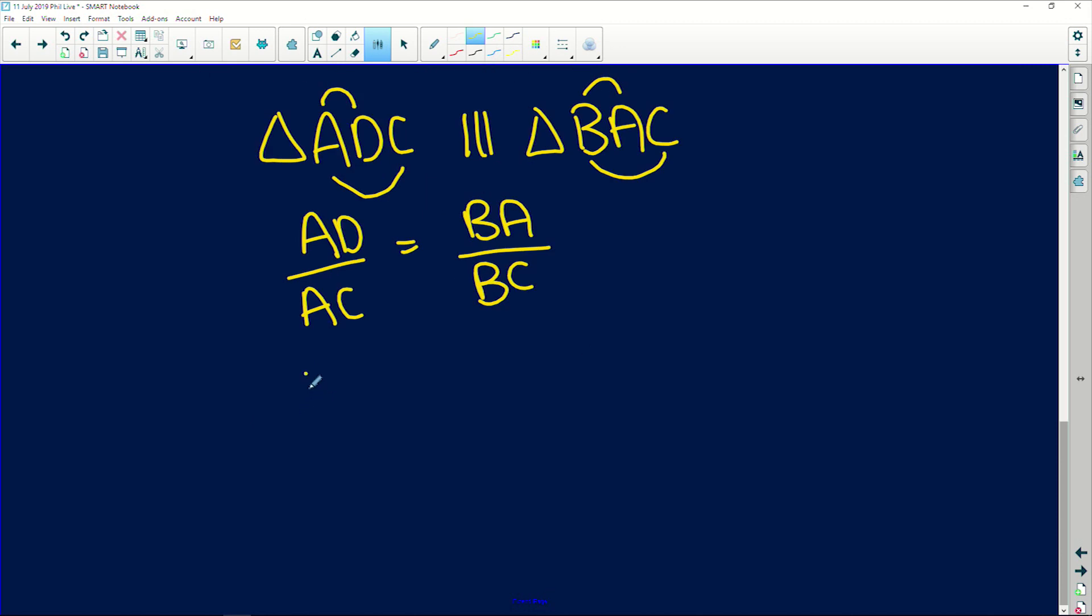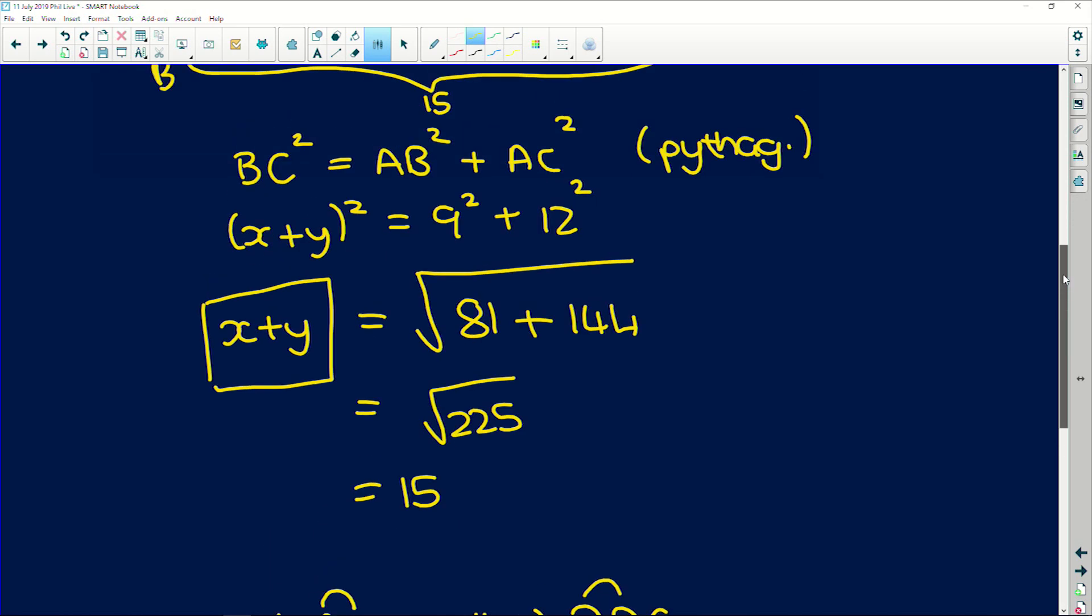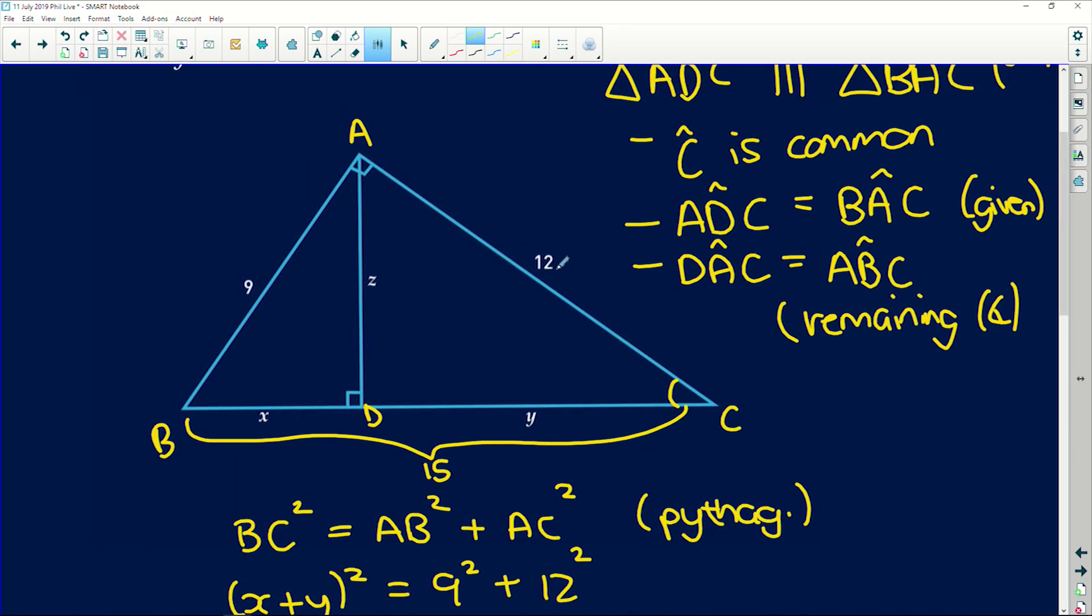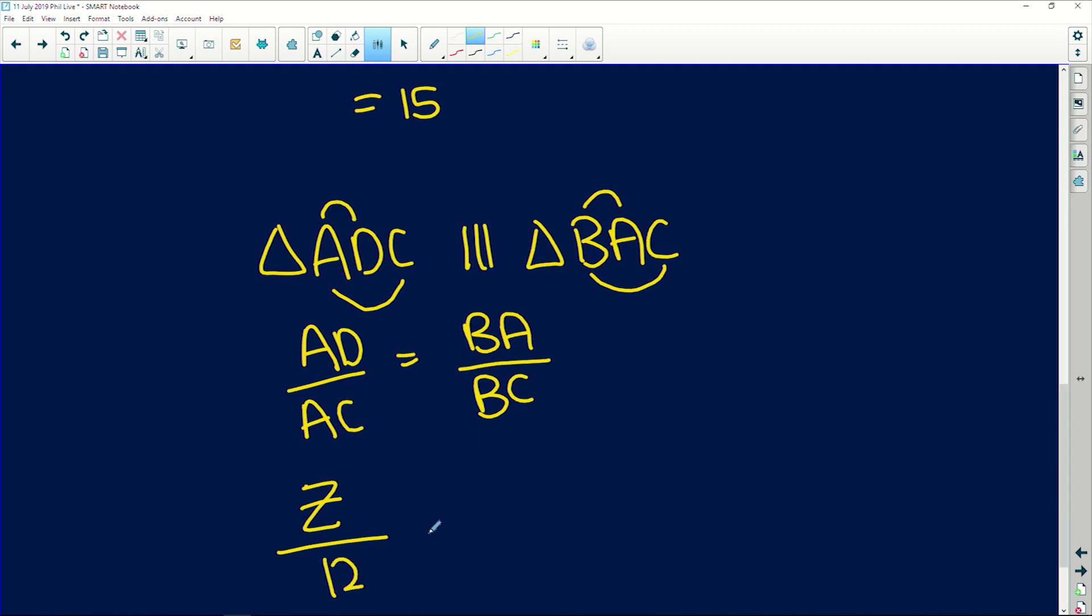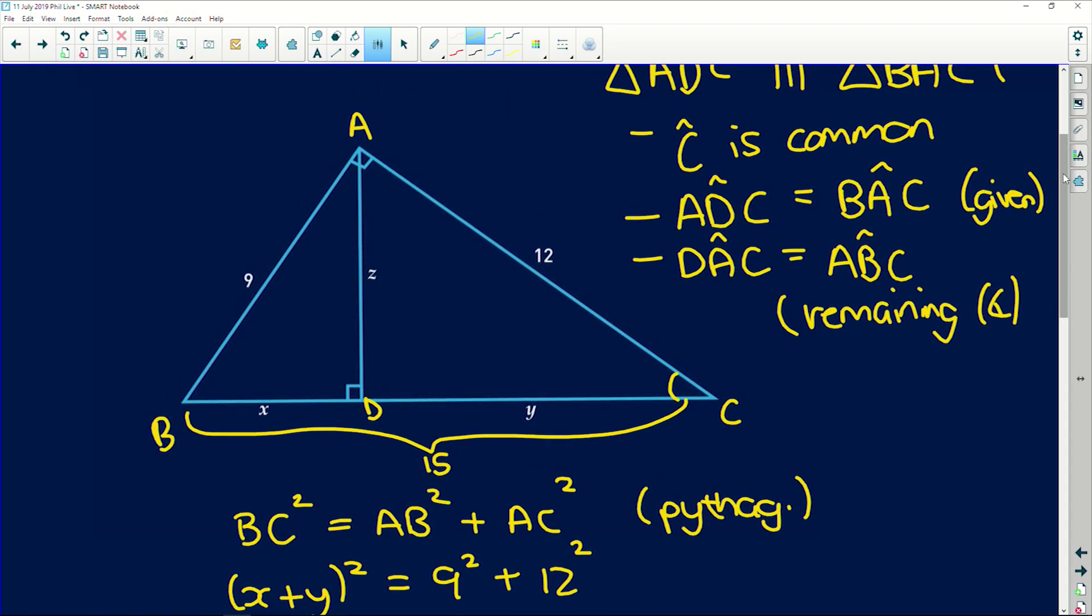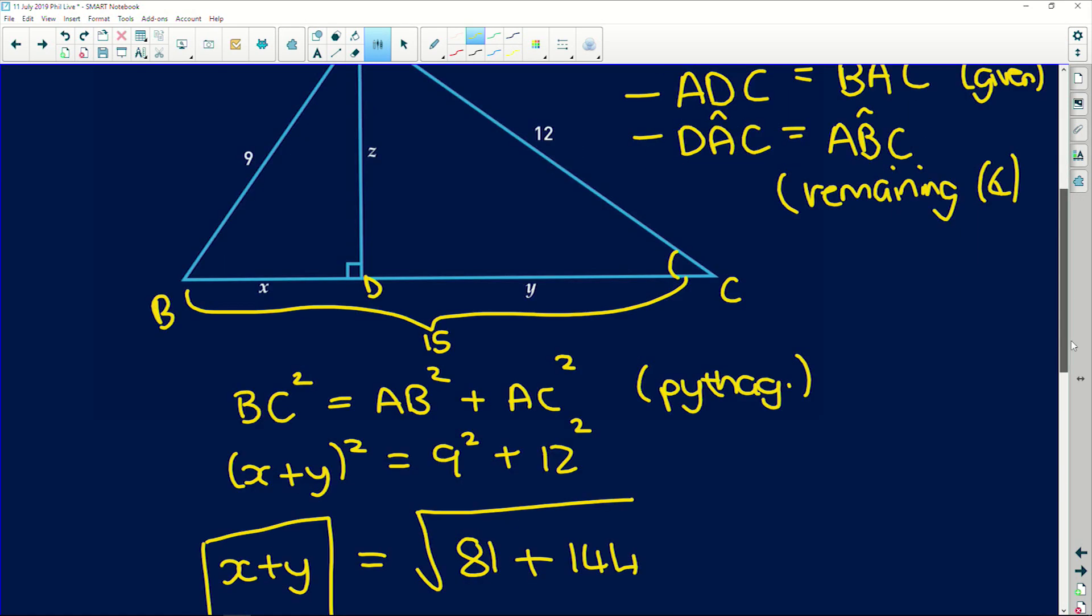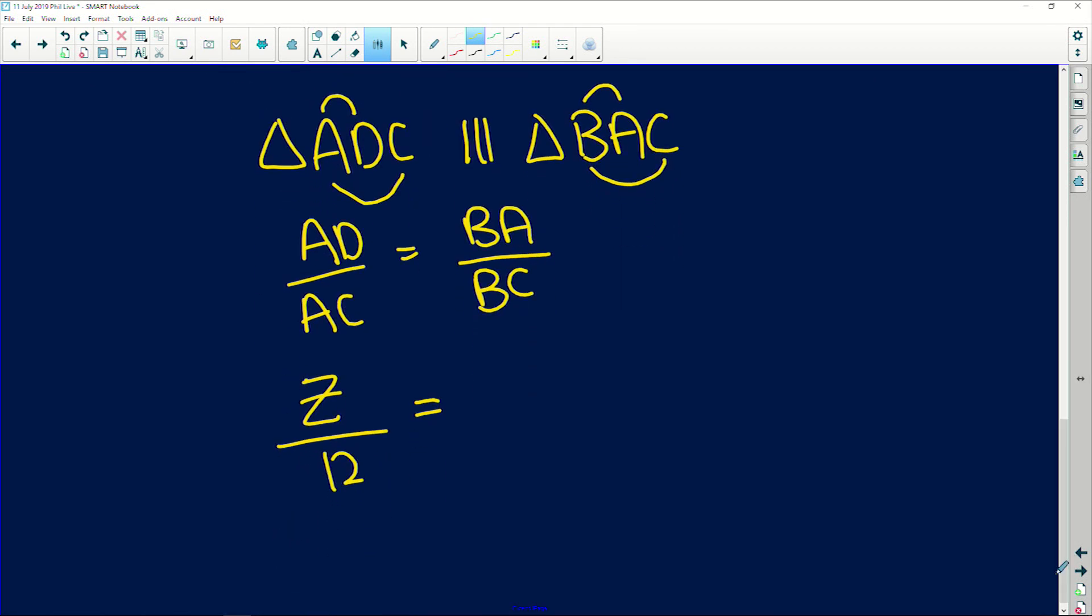So AD, which is z over AC, which is given to us as 12, is equal to BA over BC. BA is 9 and BC we just found is 15. 9 over 15. Why? Because of similarity.